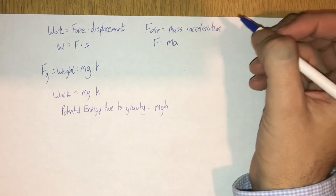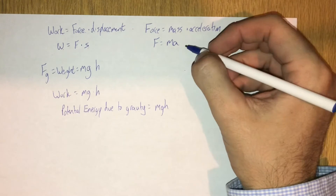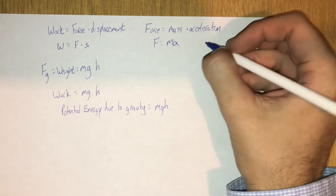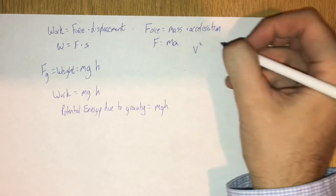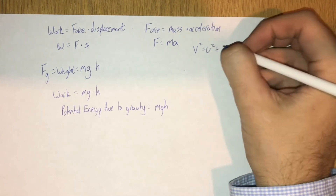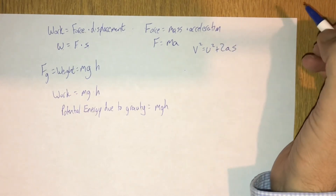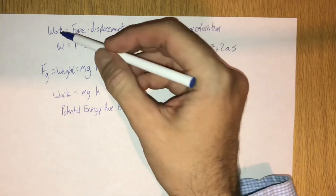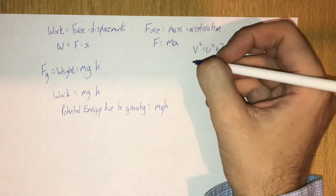Now let's consider the case of an object which changes its velocity. In a previous video we derived equations for motion. The fourth equation of motion is that the final velocity squared is equal to the initial velocity squared plus two times the acceleration times the displacement. So now if we consider Newton's second law and again the definition of work, which is force times displacement, let's see what we get when we combine this.